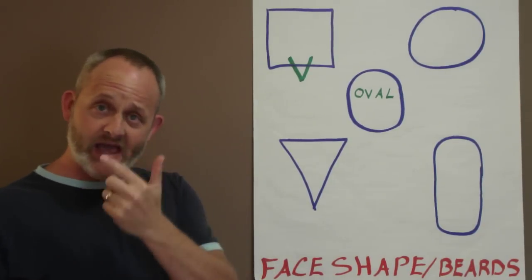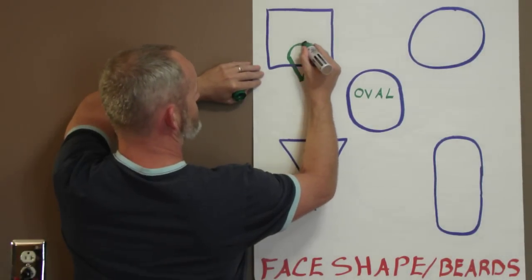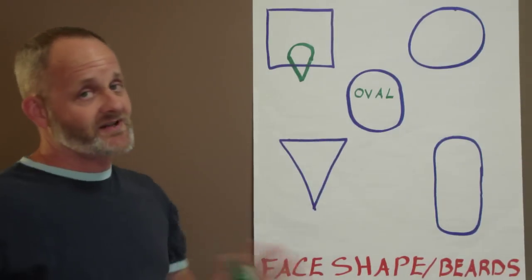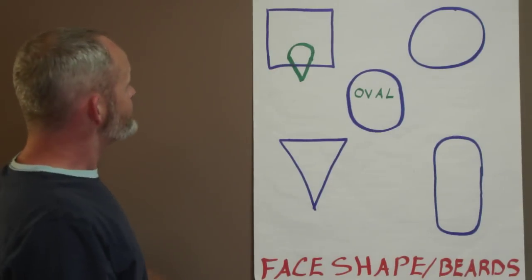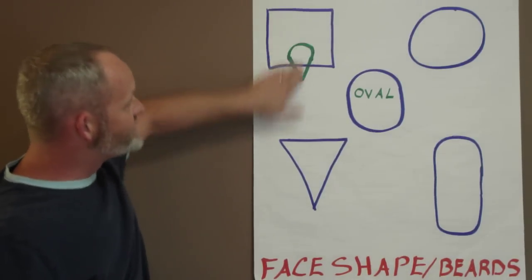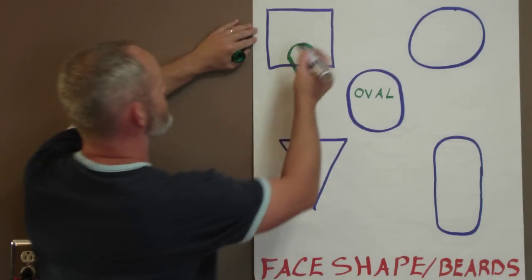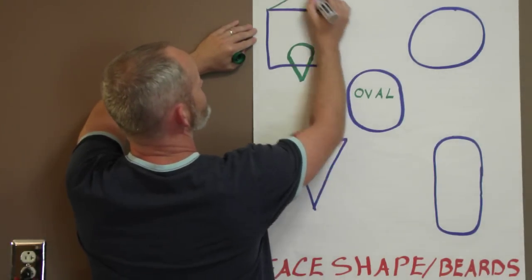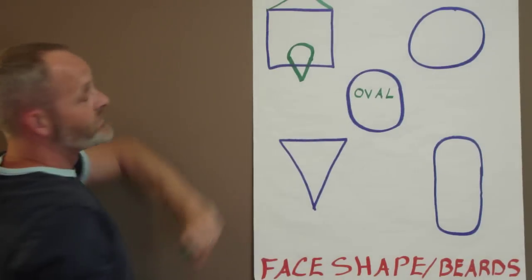Anytime you add a mustache to a goatee, that becomes a musketeer. Just different terminology. Everybody thinks that's a goatee, but it's actually a musketeer. So anything that can lengthen the shape on Mr. Blockhead is going to help us out a lot. Maybe even some kind of fauxhawk or something when it comes to his haircut. That way, when you create the total shape, it's more oval.